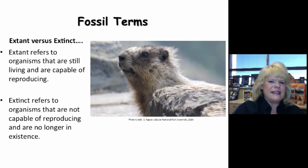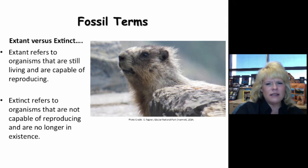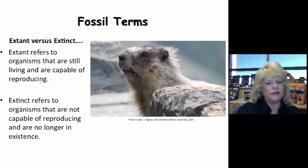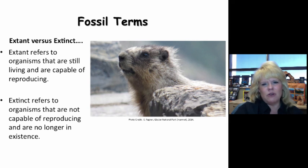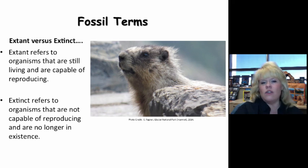So what does extant versus extinct mean? You're looking at a marmot from Glacier National Park — that would be an extant species, meaning it's still alive today and capable of reproducing. We'll keep coming back to that reproducing theme, because an animal can be alive but unable to reproduce. If it's the last of its pair for reproduction, it doesn't matter — it isn't going to happen. So there is such a thing as extinct in the wild, which is actually a qualification under the Endangered Species Act.